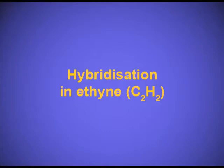Today we will study about hybridization in ethyne. Ethyne has the molecular formula C2H2. We know that carbon is tetravalent, and since there are two hydrogens and two carbons, in addition to the sigma bond there must be pi bonds. In ethyne, there are two pi bonds and one sigma bond between the two carbon atoms.